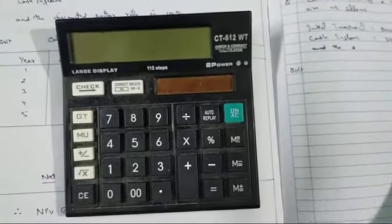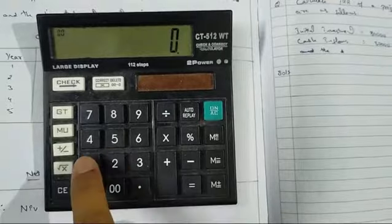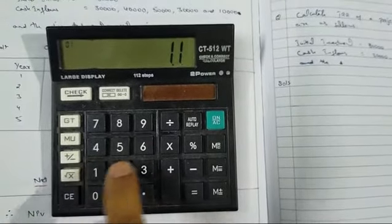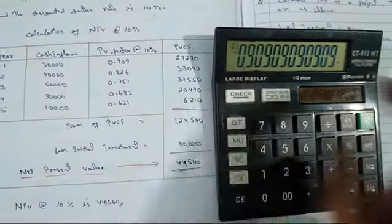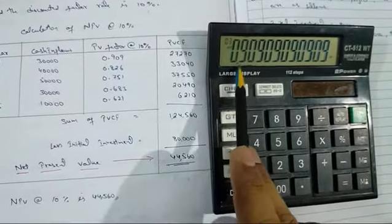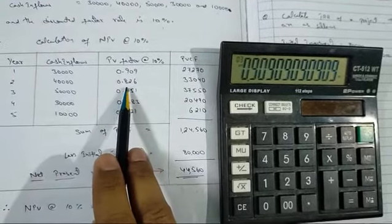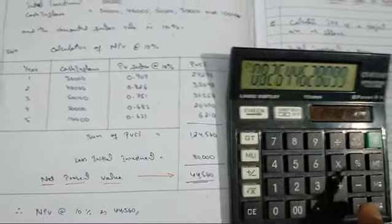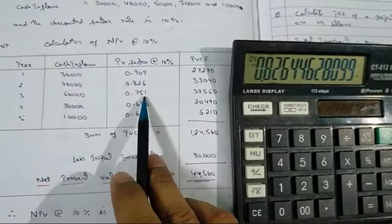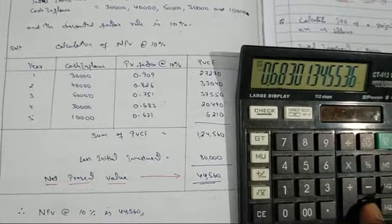You can also find these values using a calculator. What you need to do is enter 1.1 and press divide, then equals. For 10 percent, 1 divided by 1.1 gives 0.909 for year one. Keep pressing equals for subsequent years: year two gives 0.826, year three gives 0.751, and year four gives 0.683.